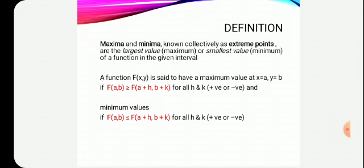A function f(x, y) is said to have a maximum value at x equal to a and y equal to b. If f(a, b) is greater than or equal to f(a+h, b+k) for all h and k, this means the function value at (a, b) will be greater than or equal to all neighbouring points. So a and b will give the maximum value.